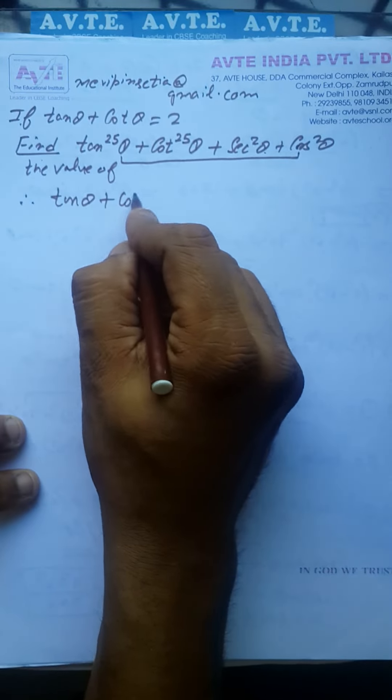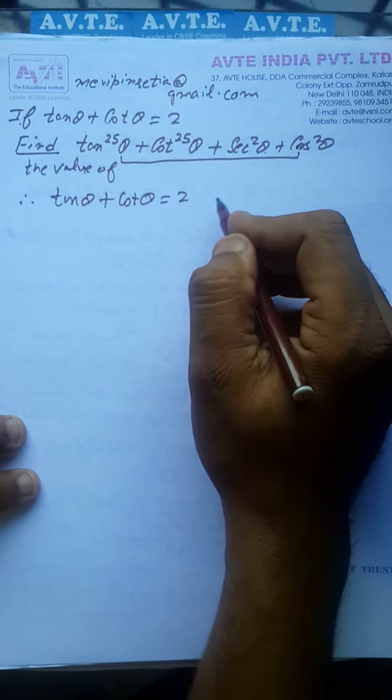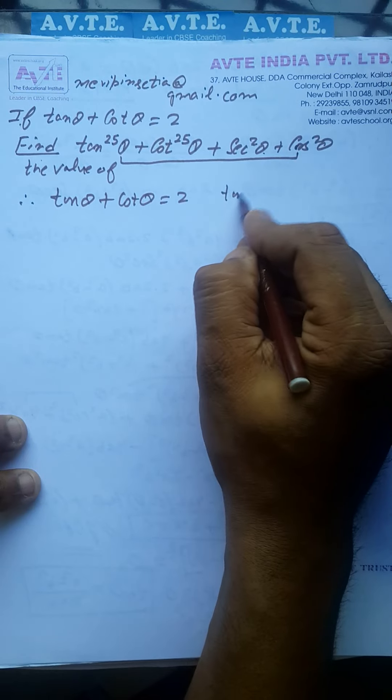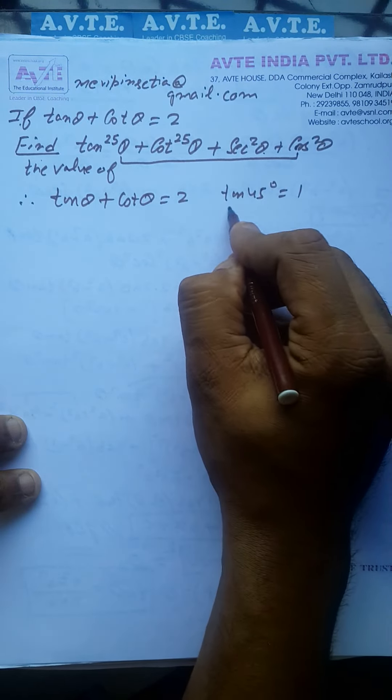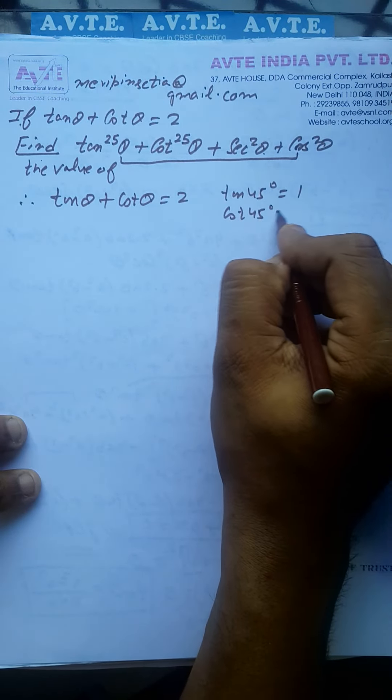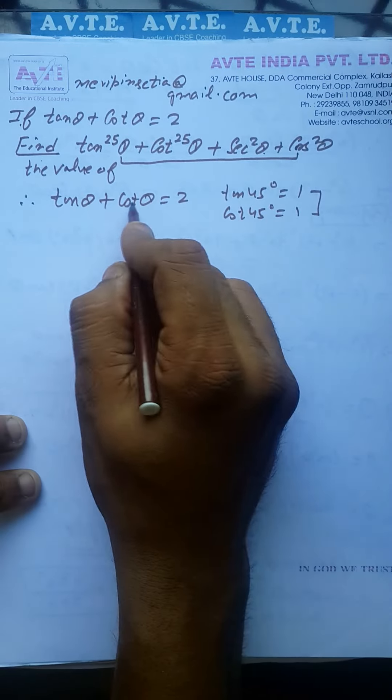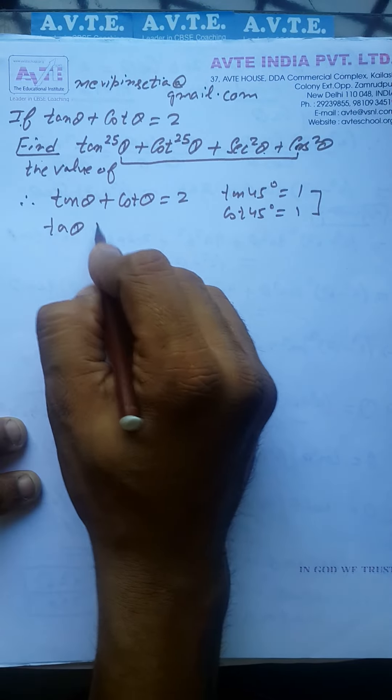What is tan theta plus cot theta? If tan's value is 1 and cot's value is 1, then 1 plus 1 is 2. So theta here is 45 degrees. We can solve this here.